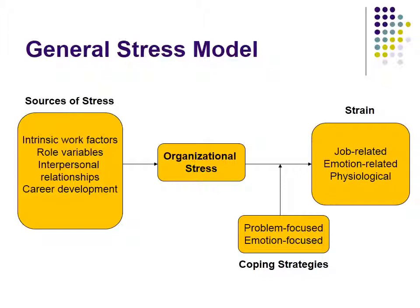Problem-focused coping asks: how do I actually handle those sources of stress at the source? If I have a role where my role is ambiguous, can I go in and make it less ambiguous? Can I talk to my supervisor and ask for more structure? That would be a problem-focused solution. An emotion-focused solution is to not let it affect you — acknowledging it's ambiguous and developing strategies to keep it from becoming strain because you know you can't change it. Research has found that even people experiencing organizational stress, if they successfully use a coping strategy, will experience a reduction in strain or even be removed from experiencing strain.